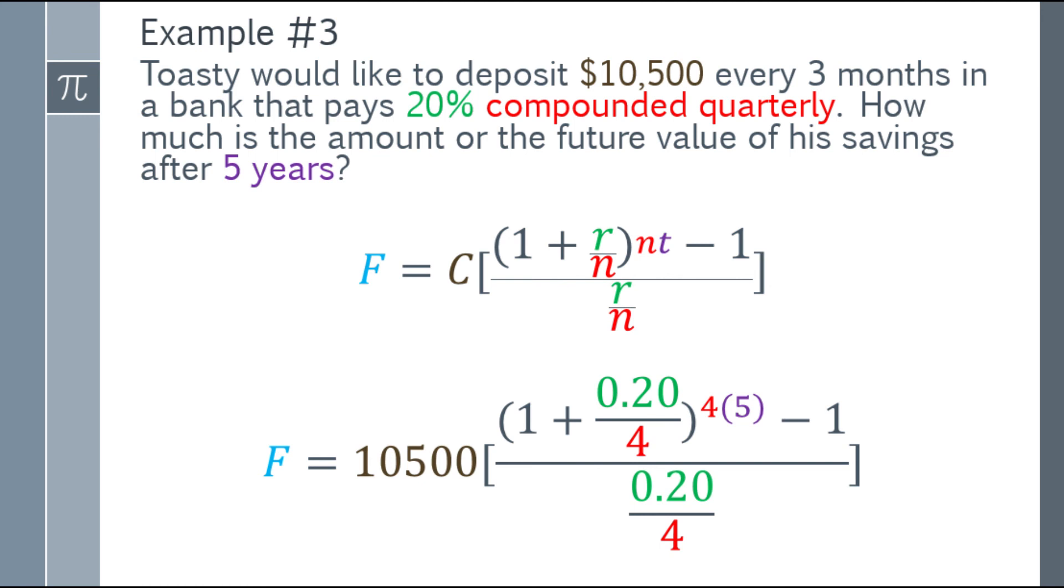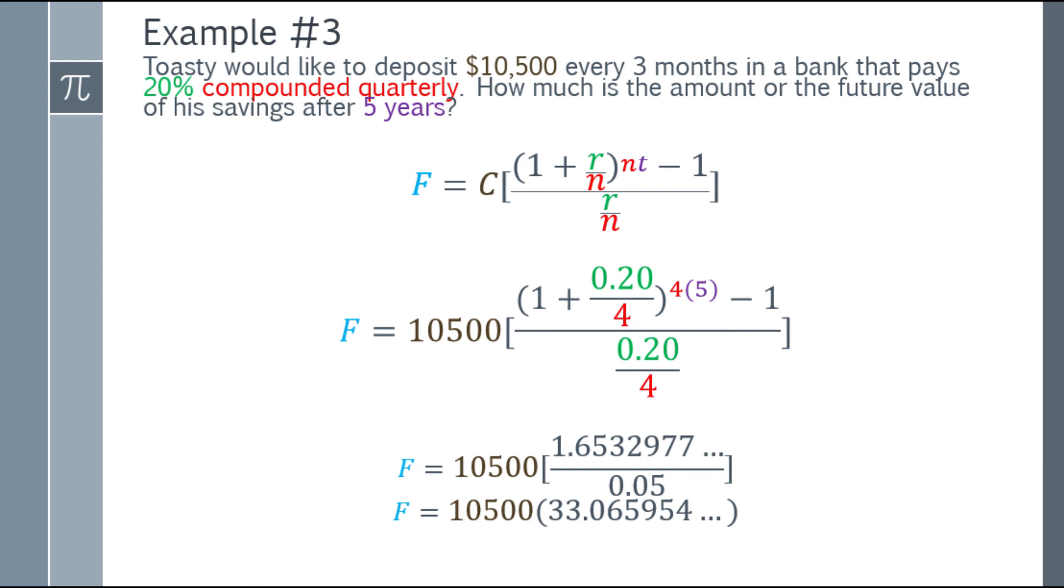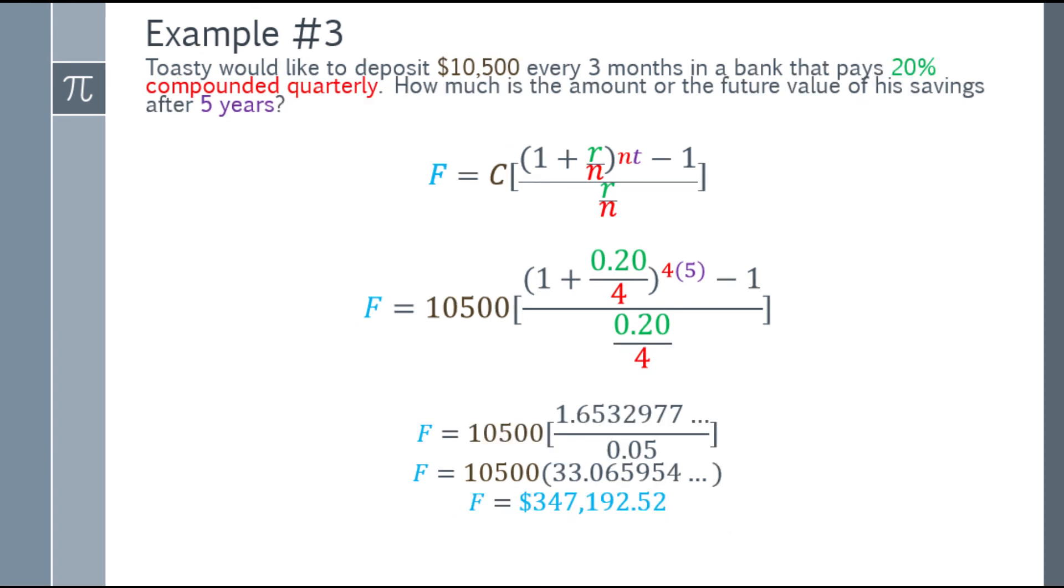Simplify the numerator: 0.20 over 4 plus 1 raised to the 20th power (4 times 5), then subtract 1, giving 1.6532977 and so on. Denominator is 0.20 over 4, which is 0.05. Divide to get 33.065954. Multiply by 10,500 and you get $347,192.52.